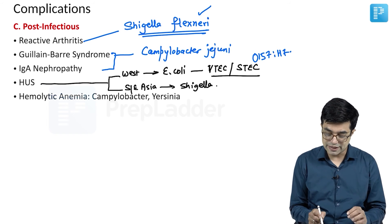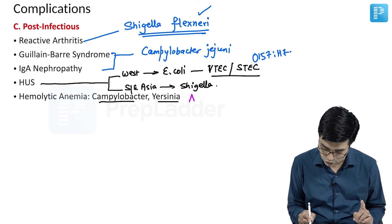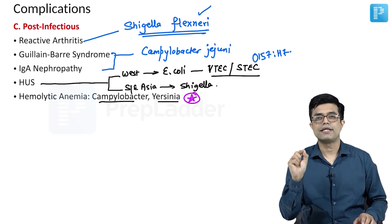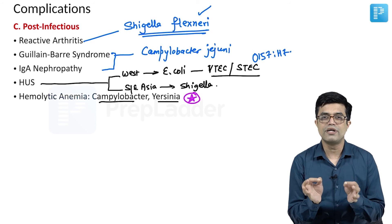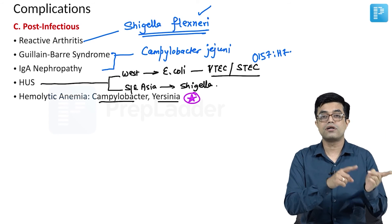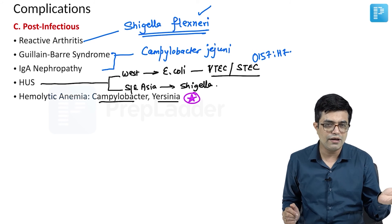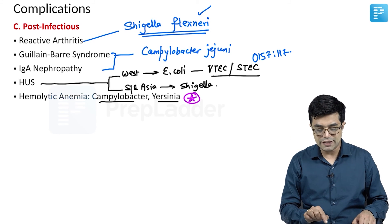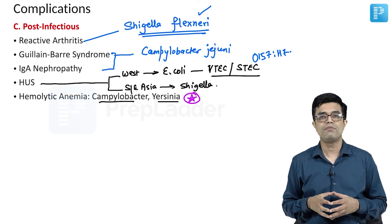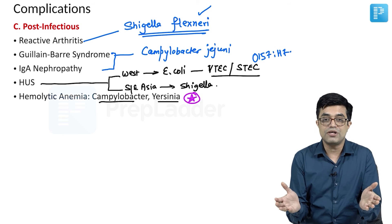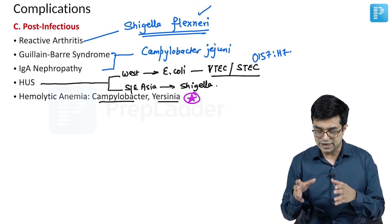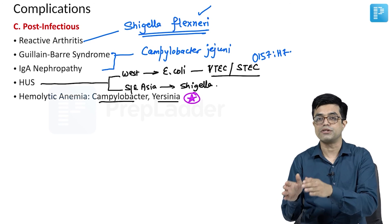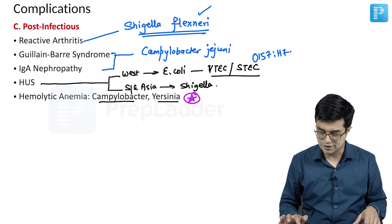Hemolytic anemia can be produced by Campylobacter and Yersinia. An important distinction: hemolytic anemia is a risk factor for non-typhoidal Salmonella — meaning a patient with hemolytic anemia has a greater chance of developing non-typhoidal Salmonella-induced diarrhea. But here, hemolytic anemia is a complication of Campylobacter and Yersinia infection — meaning it develops in a previously healthy patient as a consequence of GI infection. One is a risk factor; one is a consequence. Please do not mix up the two.